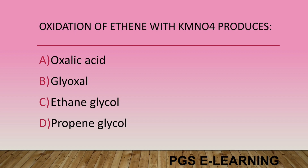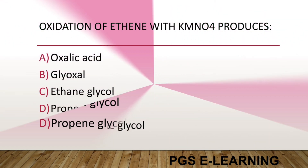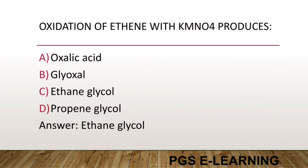Oxidation of ethene with KMnO4 produces: Option A, oxalic acid. Option B, glyoxal acid. Option C, ethylene glycol. Option D, propene glycol. Correct answer is ethylene glycol.